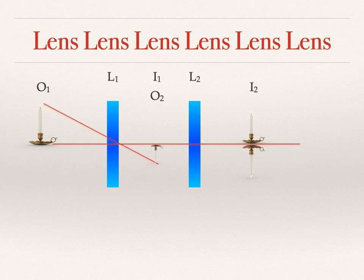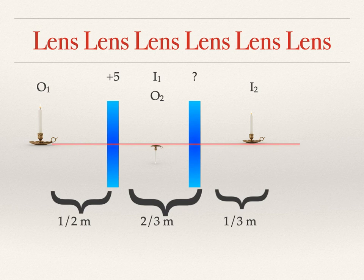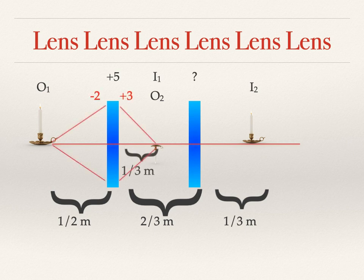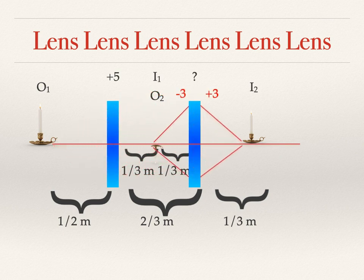Doing central ray tracing for lens 2, we discover the final image is upright. With vergence: minus 2 going in, plus 3 out of lens 1, giving a third of a meter convergence — image 1 forms a third of a meter to the right. Rays then diverge, hitting lens 2 with vergence minus 3 (converging a third of a meter to the left). We know the image converges a third of a meter to the right of lens 2, so the lens power contribution is plus 6.